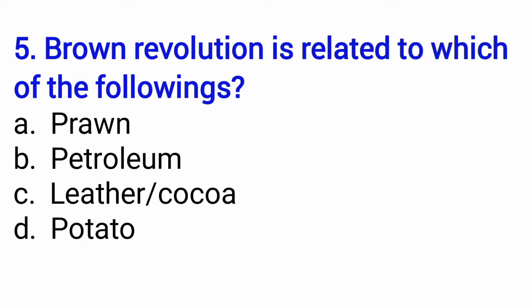The next question: brown revolution is related to which of the following? Joh bhoori kranti hai, woh unmein se kis se related hai? Is it prawn, petroleum, leather or cocoa, or potato? So your answer is option number C — leather or cocoa. Both are correct. Whichever option appears, leather or cocoa, both are right. So brown revolution is basically related to leather and cocoa production.